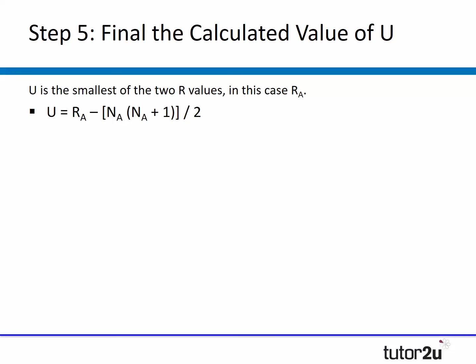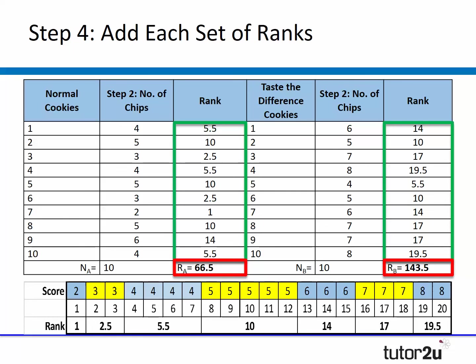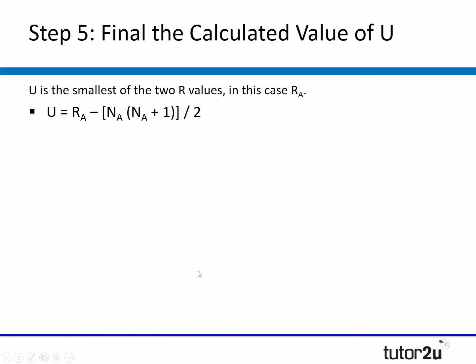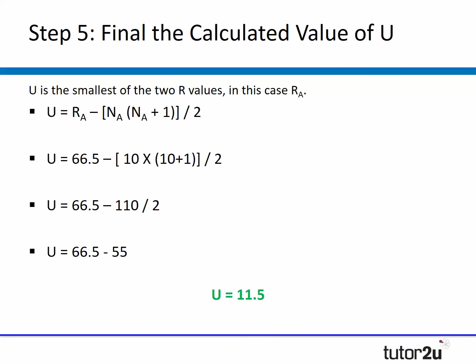Then comes the formula, which looks complicated but is relatively straightforward. The Mann-Whitney U test always works on taking the smallest of the two rank totals. Going back, R_A of 66.5 is clearly lower than 143.5, so that's the score we use. It's then just a matter of substituting the letters for the numbers step by step. Most students will be able to work through it logically to get their U value — in this case, U = 11.5. Watch out for brackets, as they can cause problems if not used correctly.